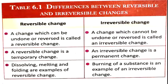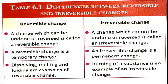To recap: a change which cannot be undone or reversed is called an irreversible change. A reversible change is a temporary change; an irreversible change is a permanent change. Dissolving, melting, freezing, and cooling are examples of reversible changes. Burning, baking, cooking, etc. of any substance are examples of irreversible changes.